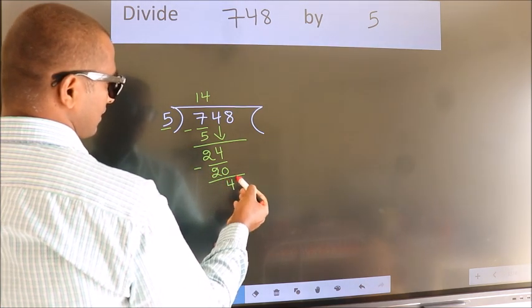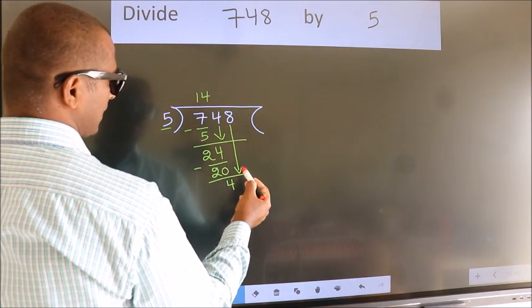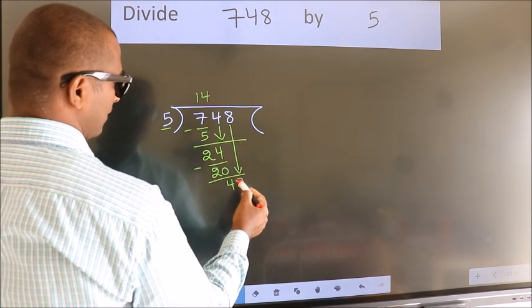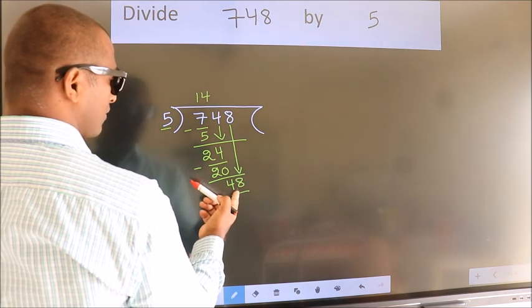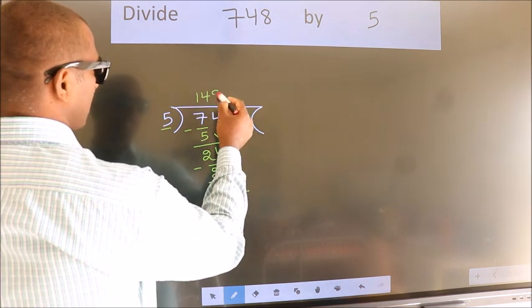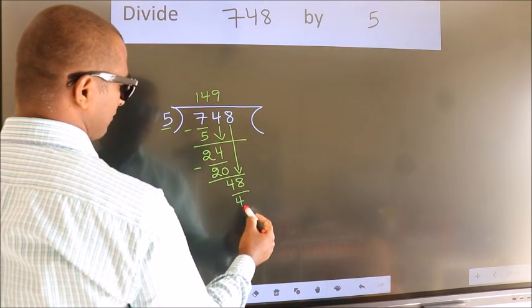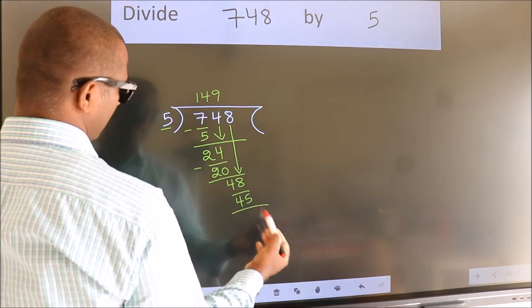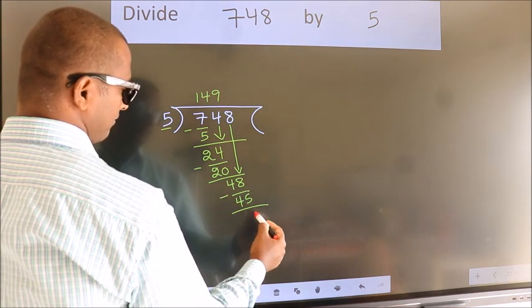After this, bring down the beside number, so 8 down, making 48. A number close to 48 in the 5 table is 5 nines 45. Now we subtract. We get 3.